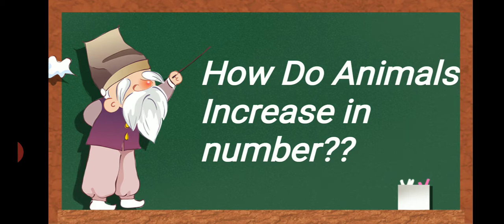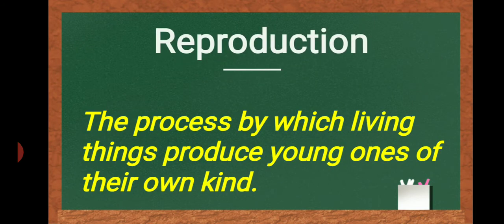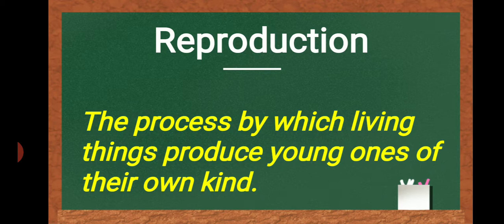Animals increase in number by the process of reproduction. The question is: what is reproduction? Reproduction is a process by which living things produce young ones of their own kind. Every living thing produces babies or young ones of their own kind, meaning similar to their look.